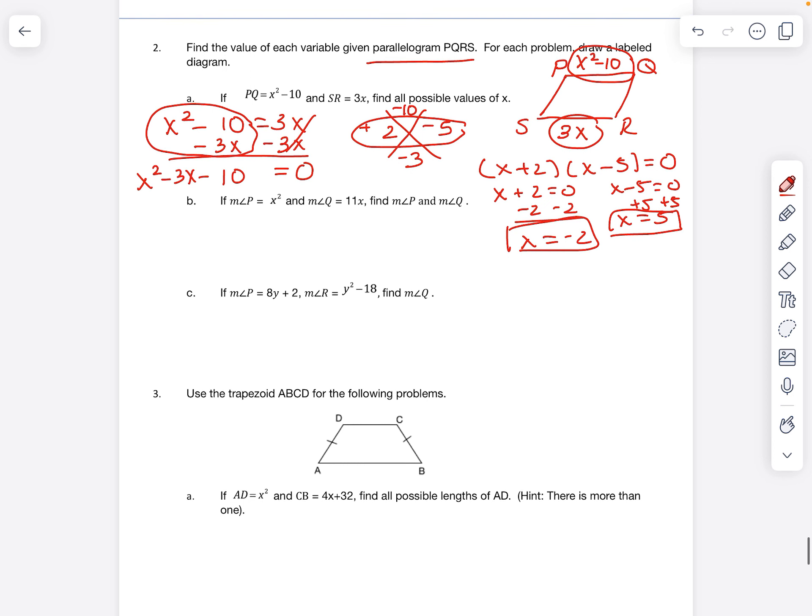Again, another parallelogram. And PQRS, same thing. You can just draw the same picture. This time, I'm giving you an angle. So the angles, remember, are on the inside. So there's P, and Q is 11x.